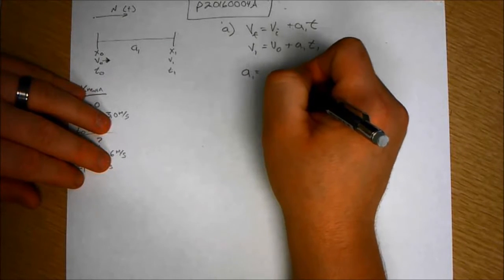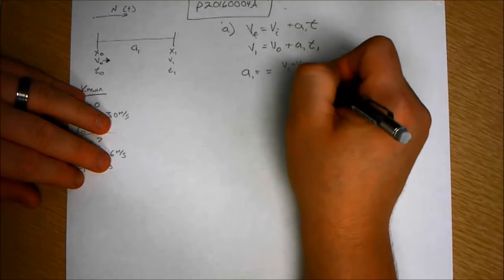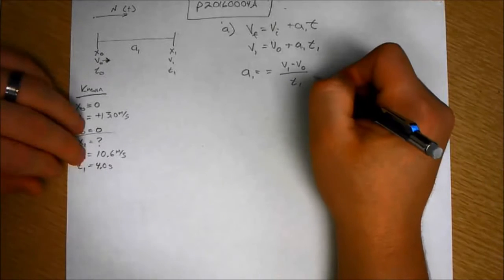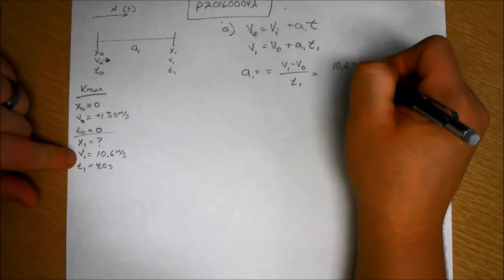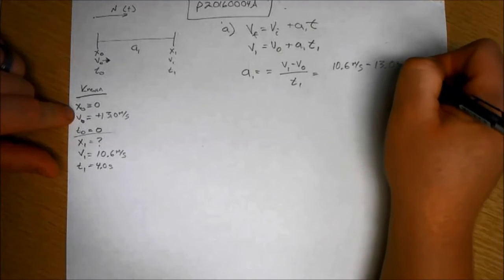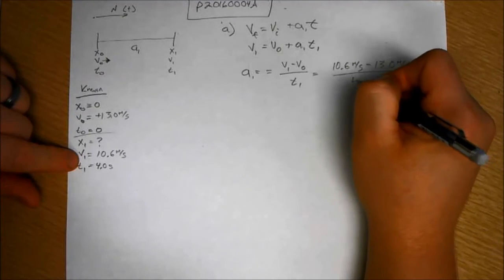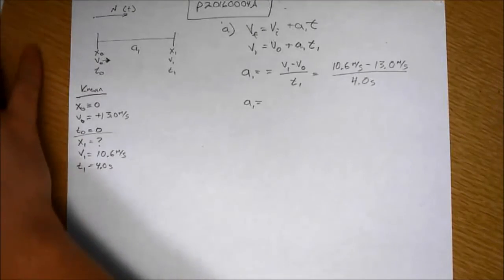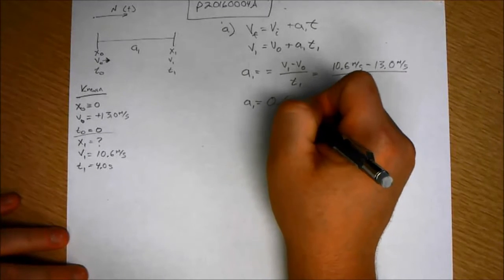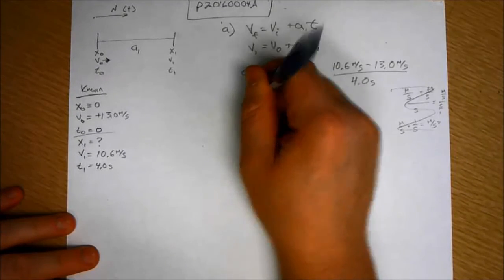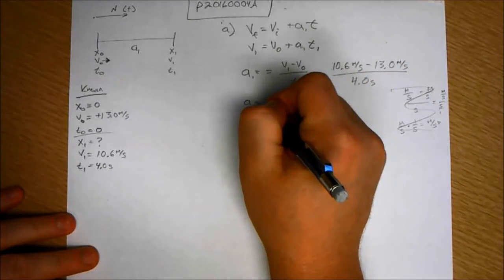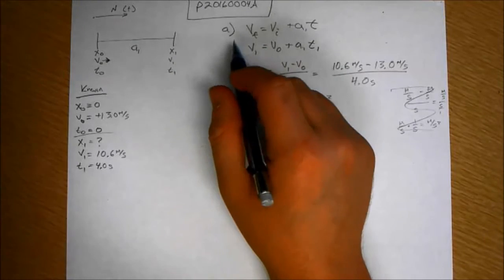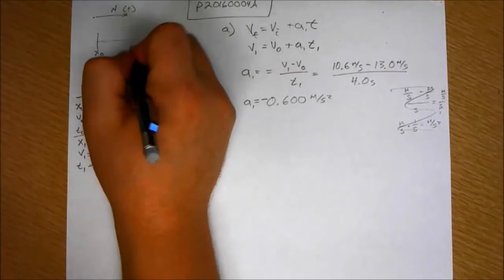So now the acceleration in that period is V1 minus V0 over T1, which is then equal to V1 which is 10.6 meters per second minus 13.0 meters per second over 4.0 seconds. So A1 is equal to negative 0.600 meters per second squared. That is negative, which is important because all A asked of you was what is the direction of the acceleration? The acceleration is negative.